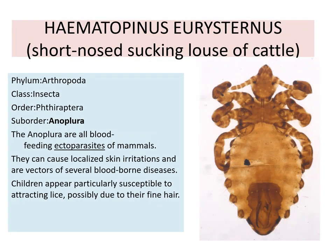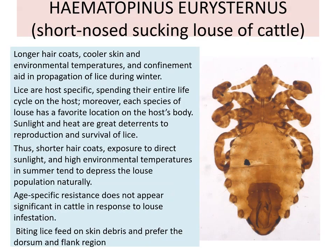The next individual is Haematopinus eurysternus, that is the short-nosed sucking louse of cattle. Classification: phylum Arthropoda, class Insecta, order Phthiraptera, suborder Anoplura. The Anoplura are all blood-feeding ectoparasites of mammals. They can cause localized skin irritation and are vectors of several blood-borne diseases. Children appear particularly susceptible to attracting lice, possibly due to their fine hair.